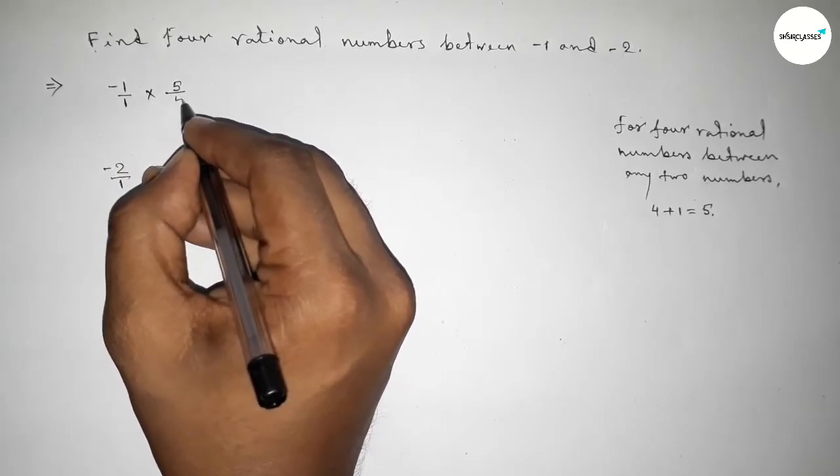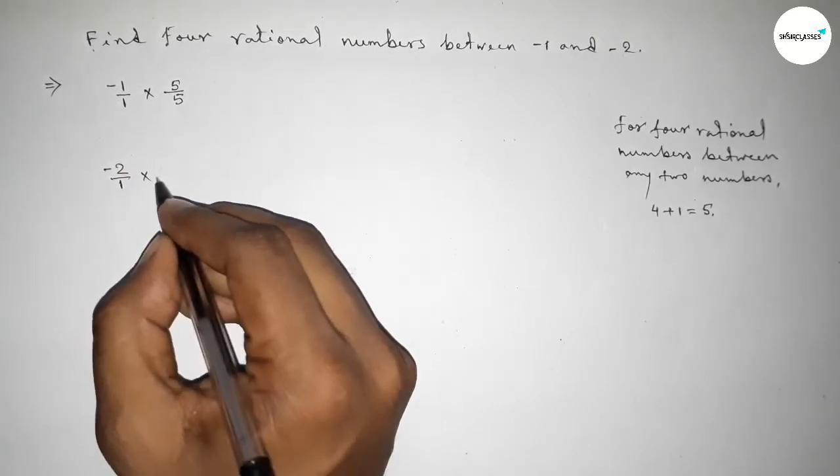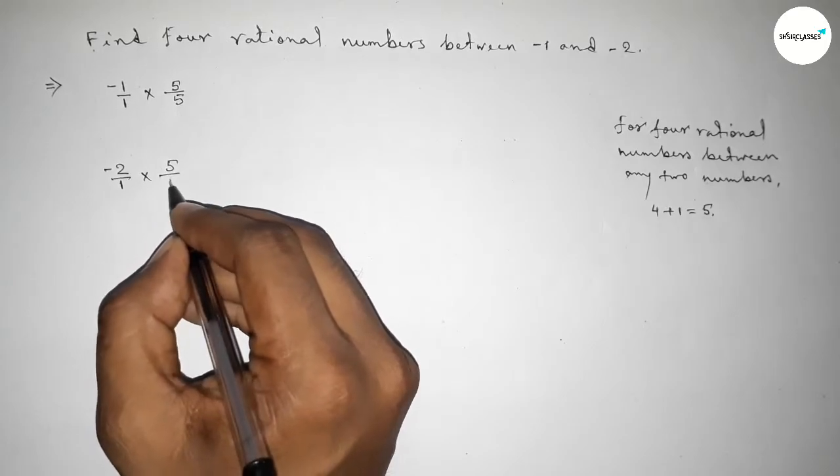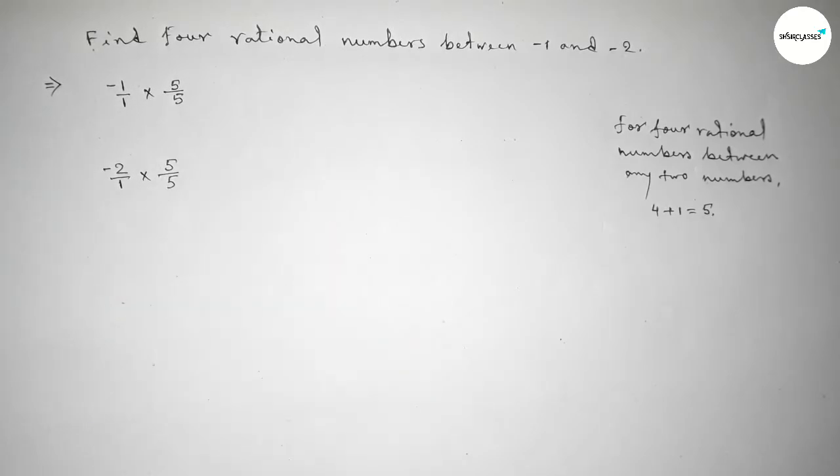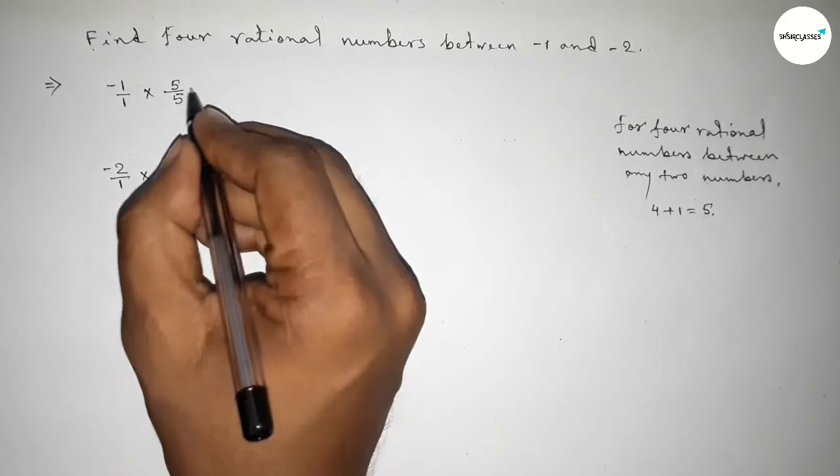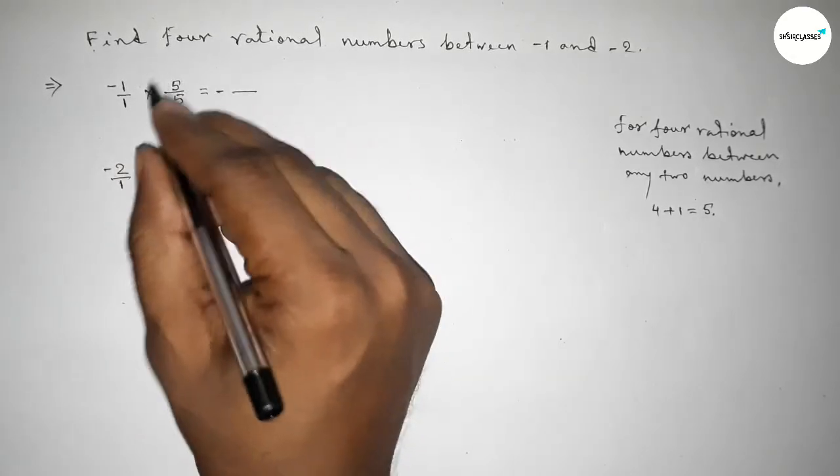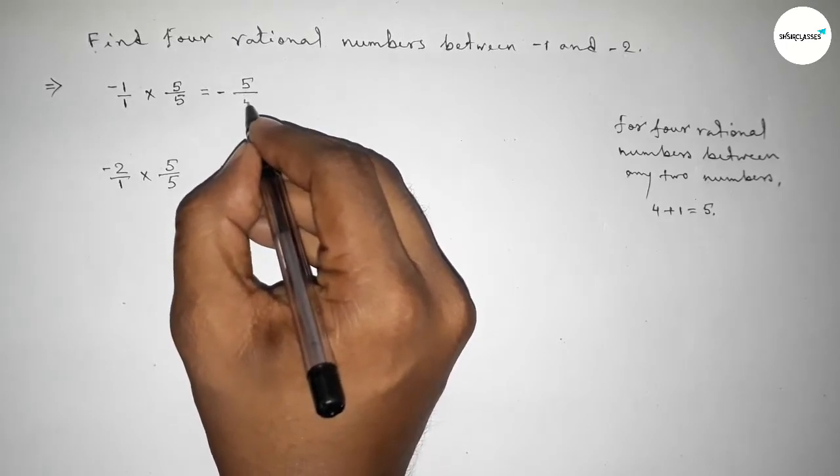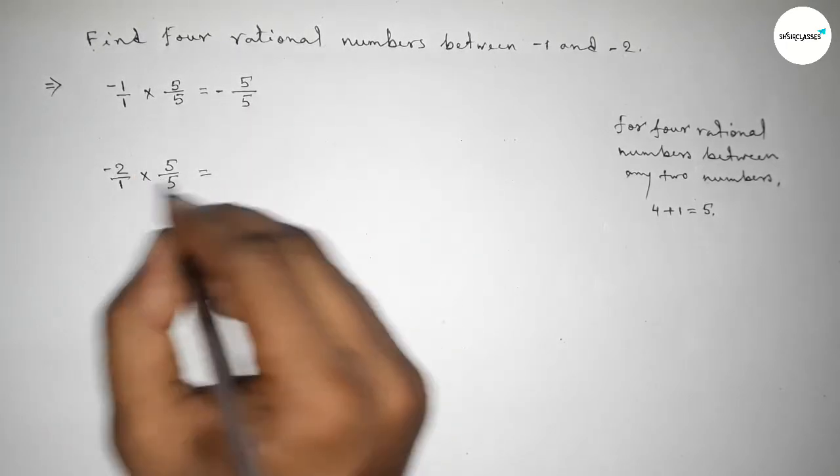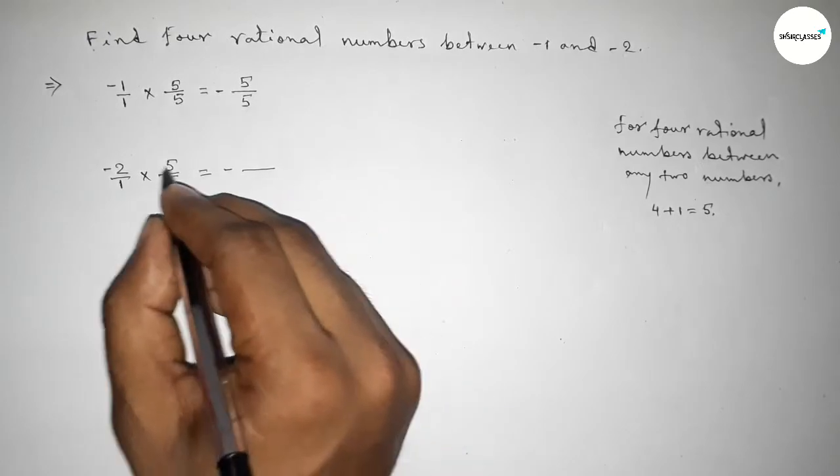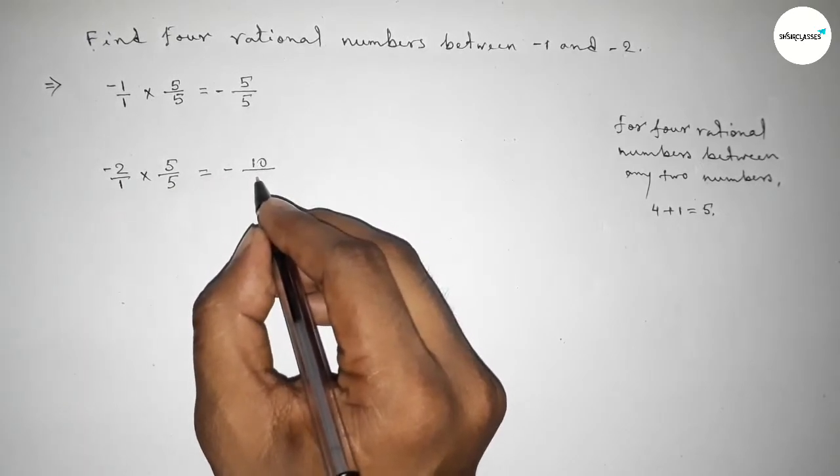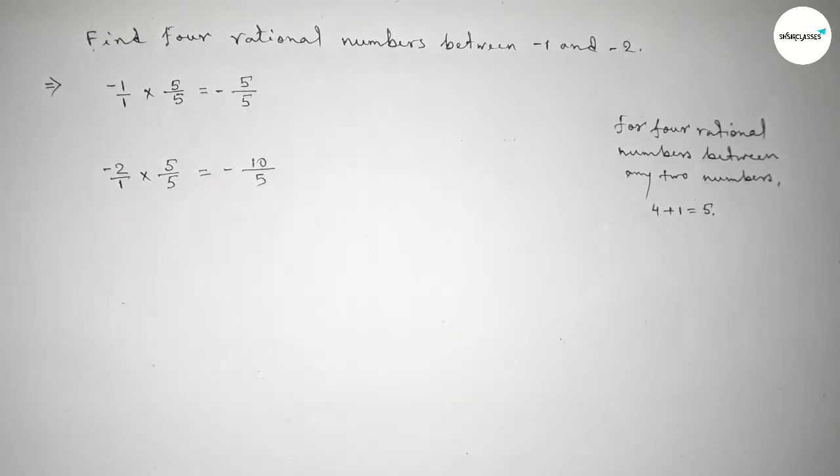So multiplying, first this one -5/5 and this one -10/5. So this is -10/5. Now, between -5 and -10...